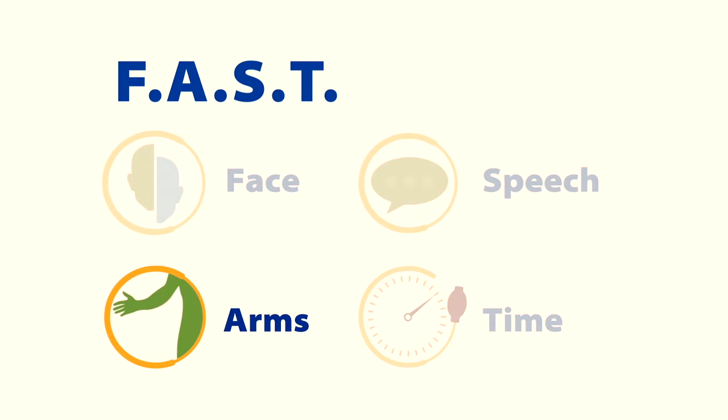Have the person raise both arms and see if one arm drifts downwards. S is for Speech. Ask the person to repeat a short phrase and notice if their words sound slurred.